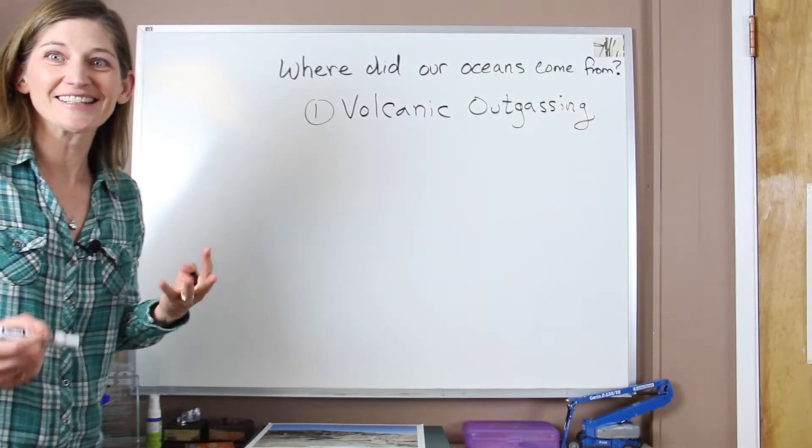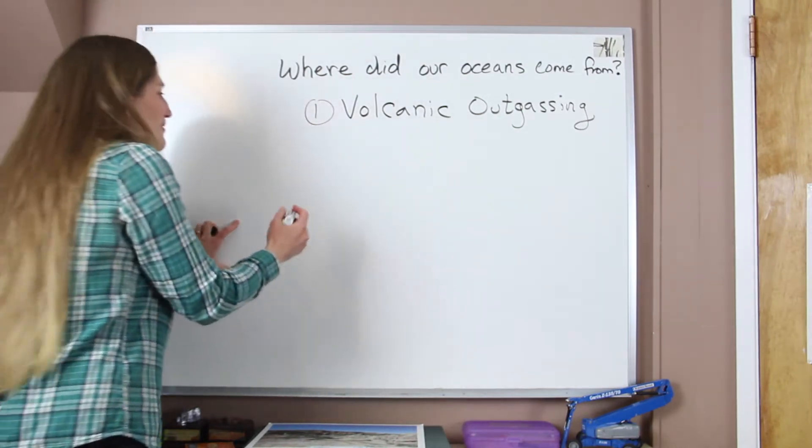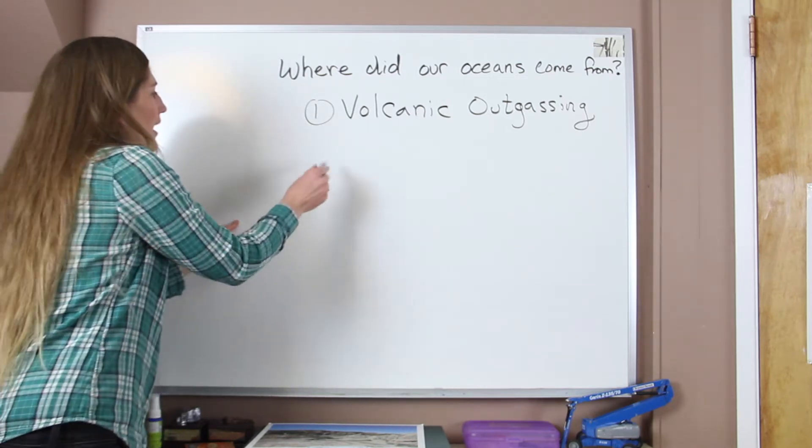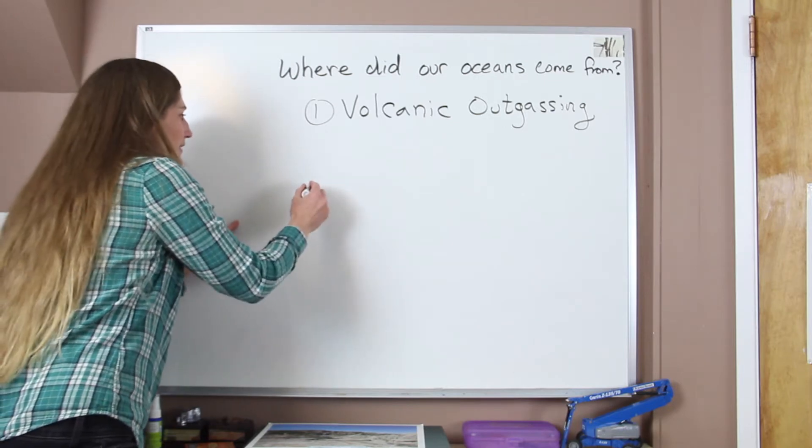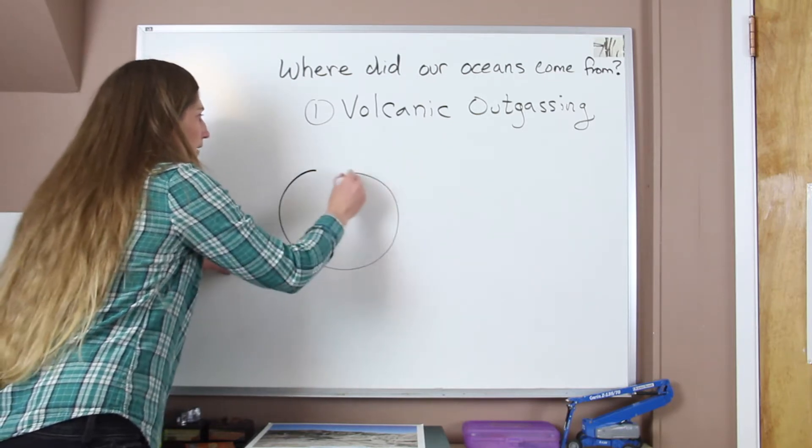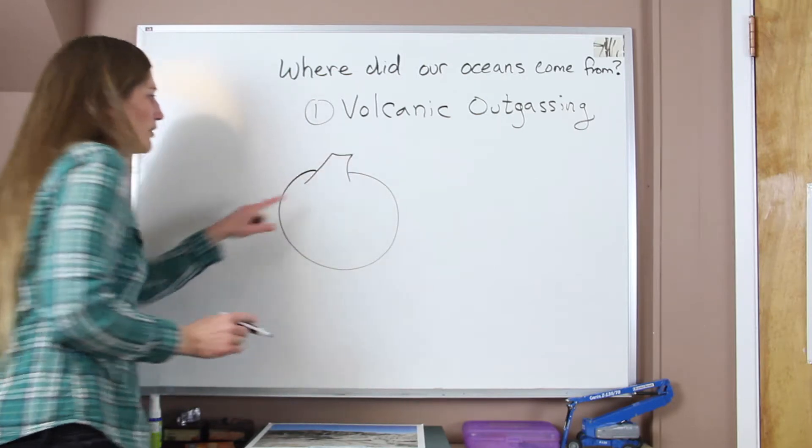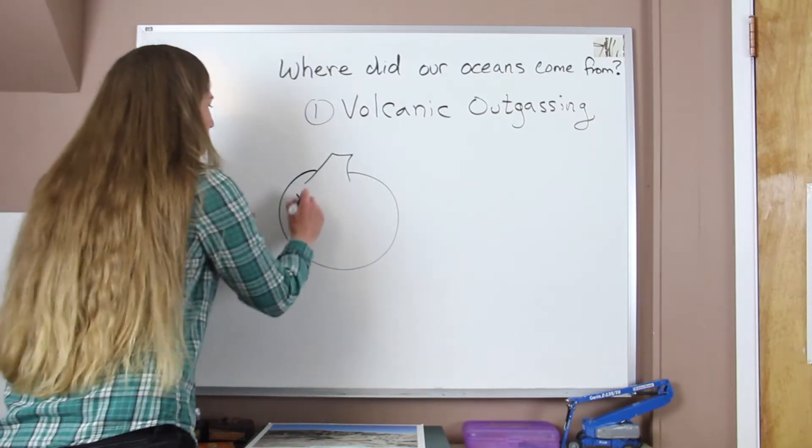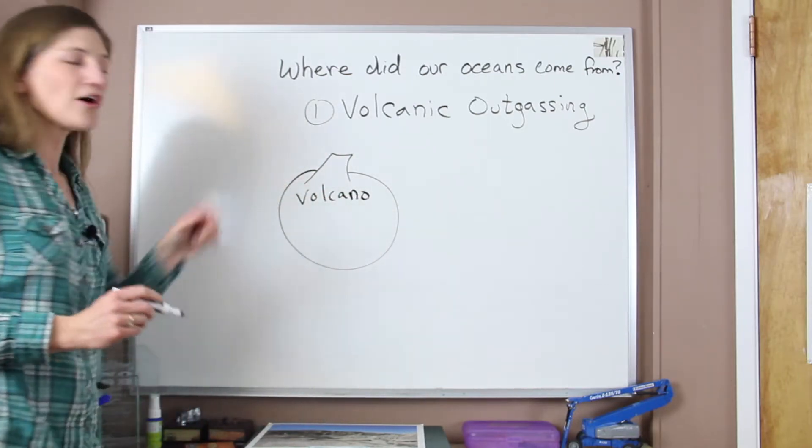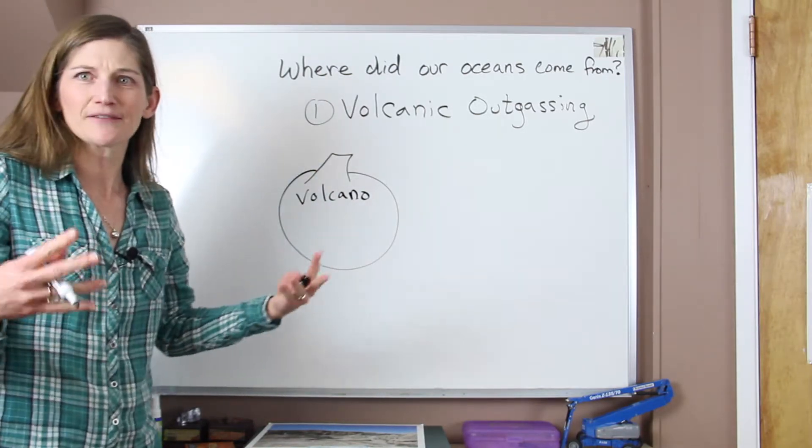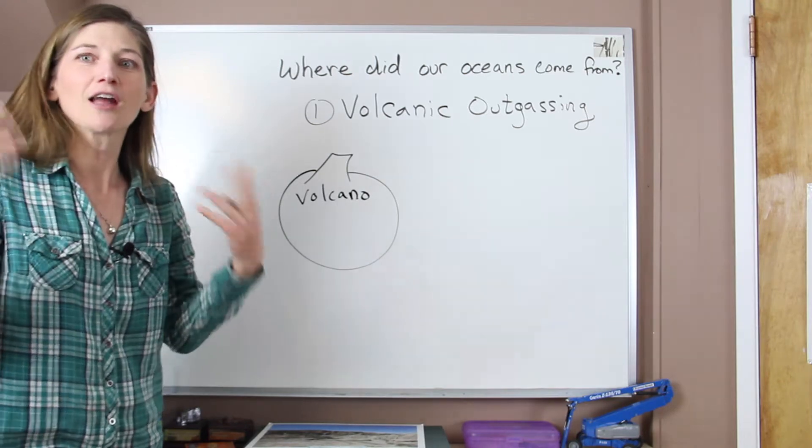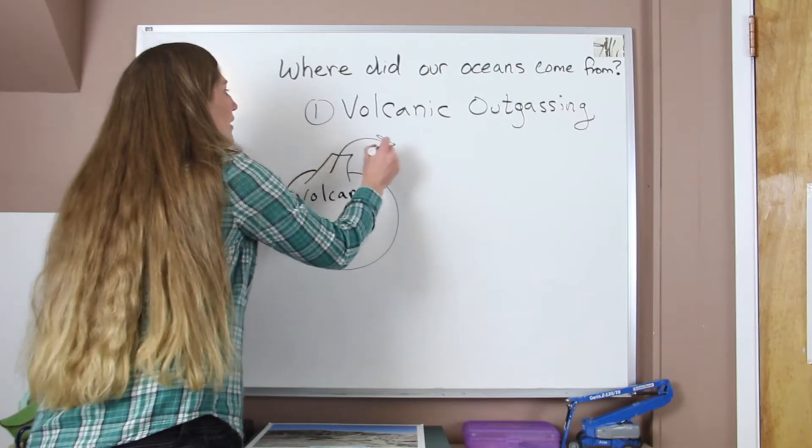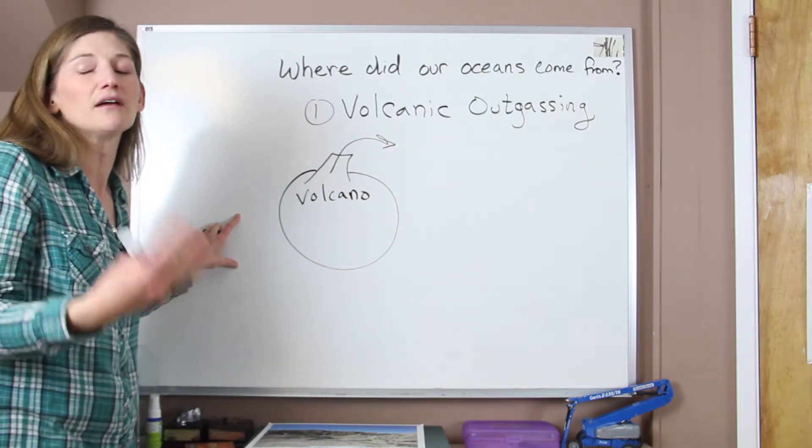Volcanic outgassing is just like the Earth's burping that would happen from normal volcanic behavior. So on our early Earth it was very, very hot and it was very active. It's still active today, and if you just imagine, we'll draw a volcano on our Earth. Looks like a funny apple, but that's going to be our volcano.